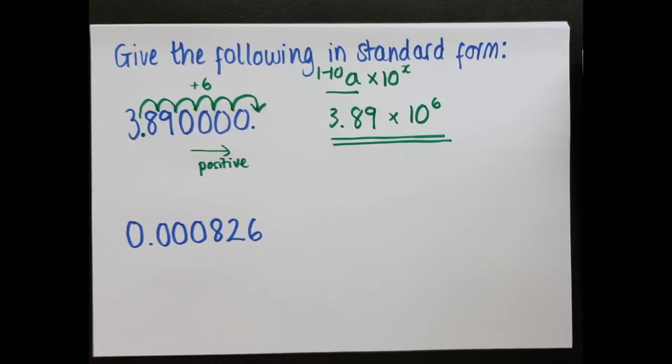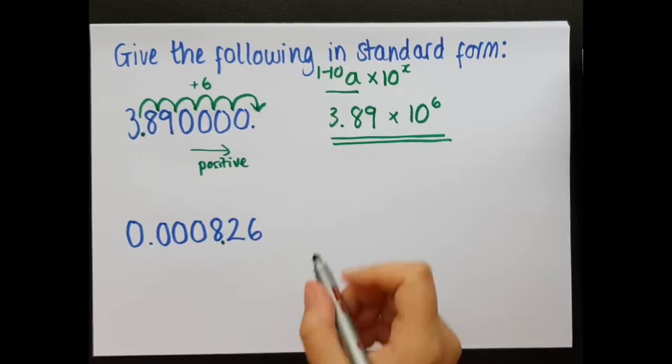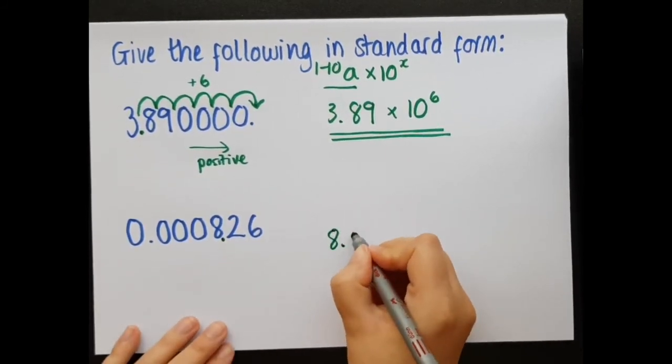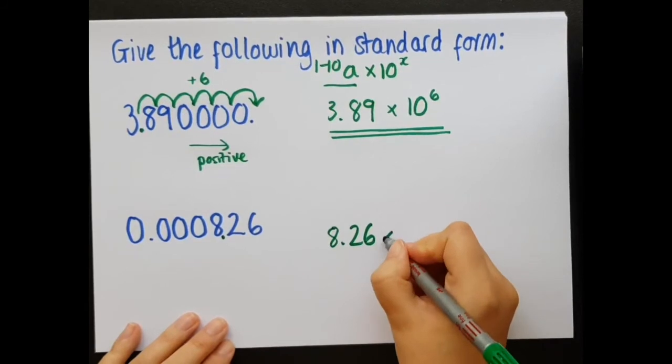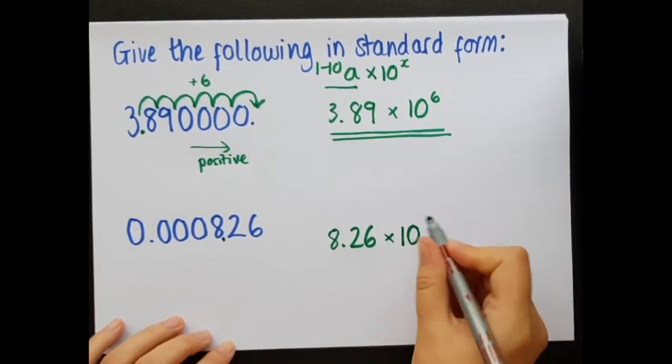Again, I'm putting in a decimal point to make this number between 1 and 10. There's only one place I can put it, and that's there, because 8.26 is between 1 and 10. So, 8.26 is my first number, and that is times 10 to the power of something. It always is in standard form.